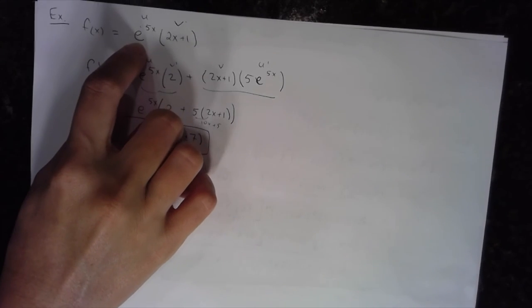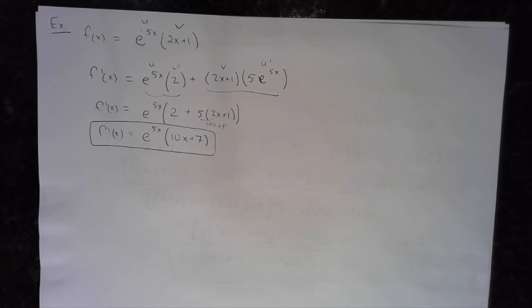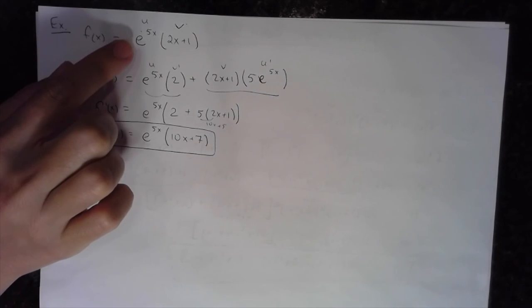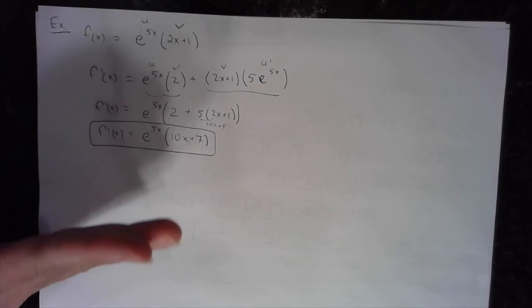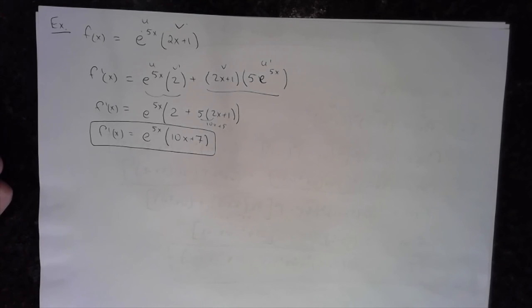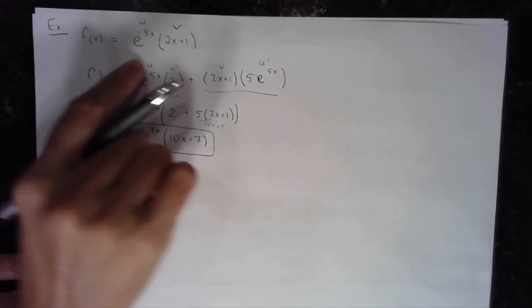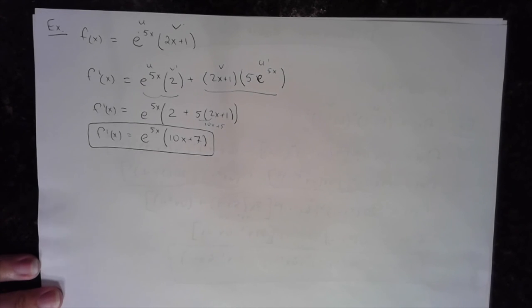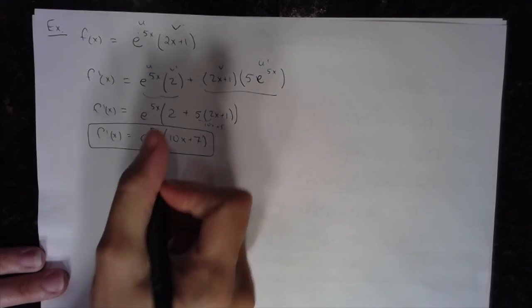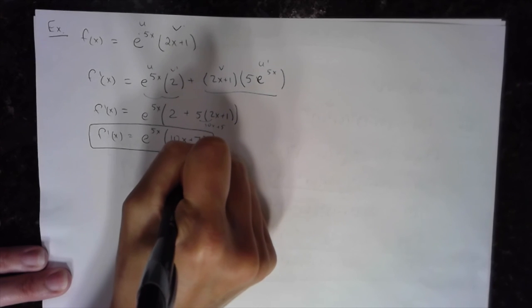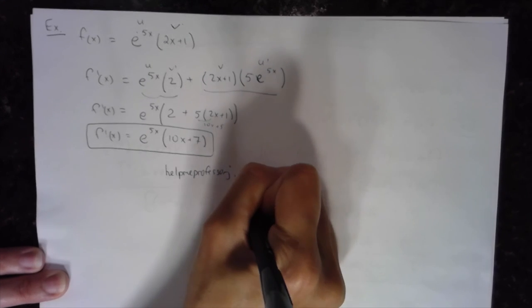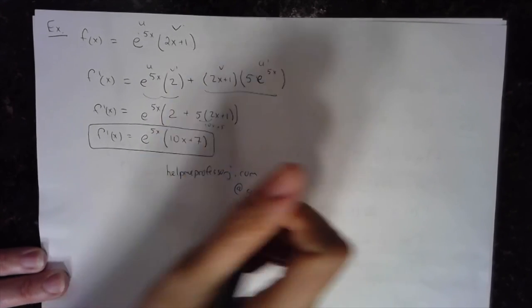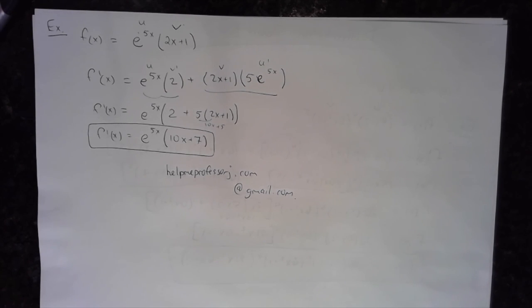So that's one example of a product rule with an exponential of base e. If you need examples of just derivatives of that type, check out that video — we need that knowledge to apply the product rule here. More advanced examples are in the next product rule video: Differentiation Product Rule 4. Comment, let me know, reach me at HelpMeProfessorJ.com or at Gmail. Like the video, let me know if you need more examples, and I'll see you guys next time.